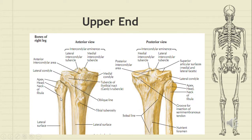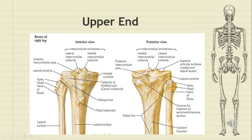As fibula is a long bone, it is described as having an upper end, lower end, and shaft. The upper end of fibula is expanded and is called the head of fibula. The pointed superolateral part of the head is called the apex or styloid process of fibula, and the constricted part below the head is called the neck of fibula. Superiorly, the head has an articular facet for attachment with the lateral tibial condyle to form the superior tibiofibular joint, and the margin of the facet gives attachment to the capsule of the tibiofibular joint.